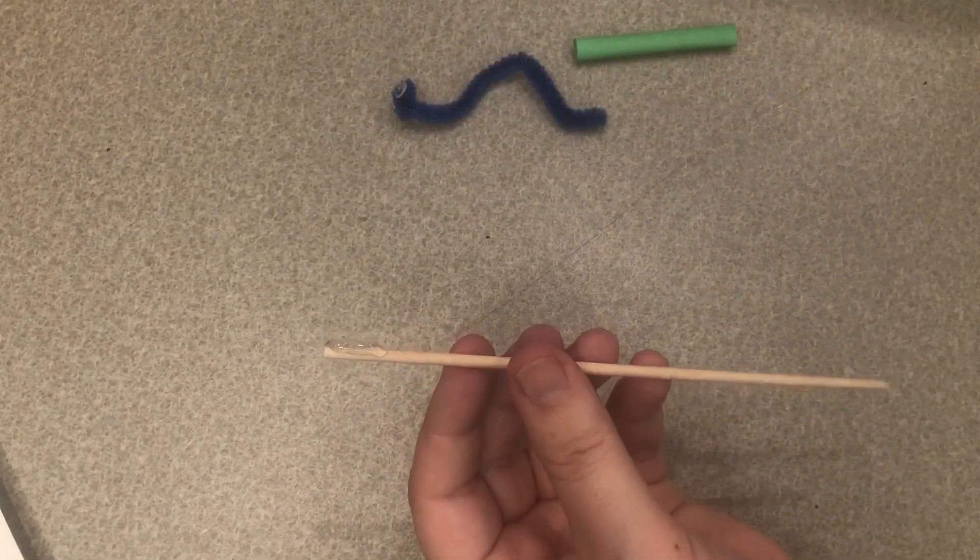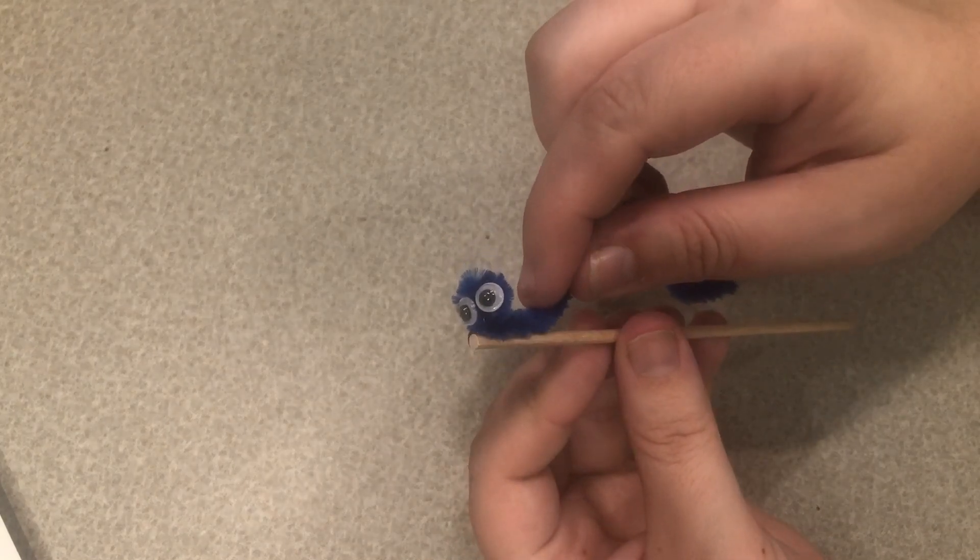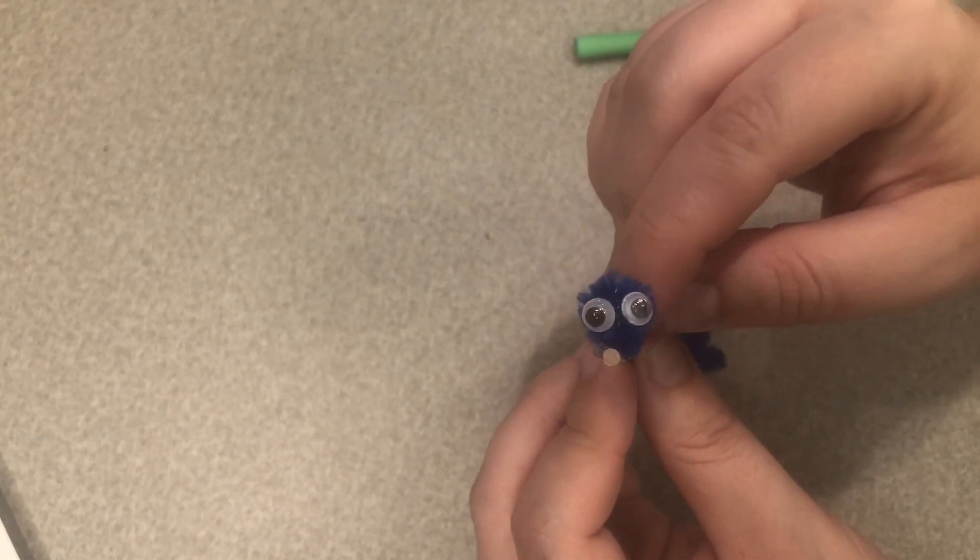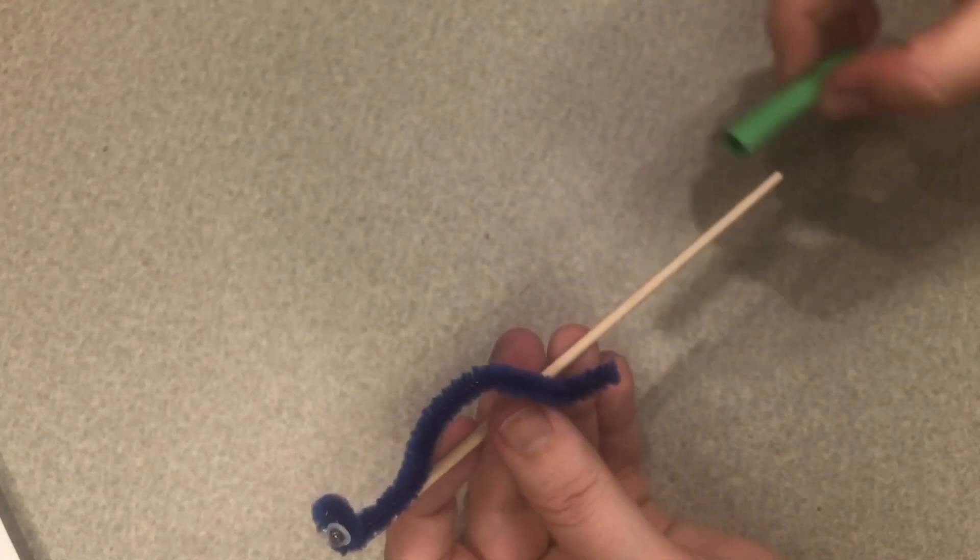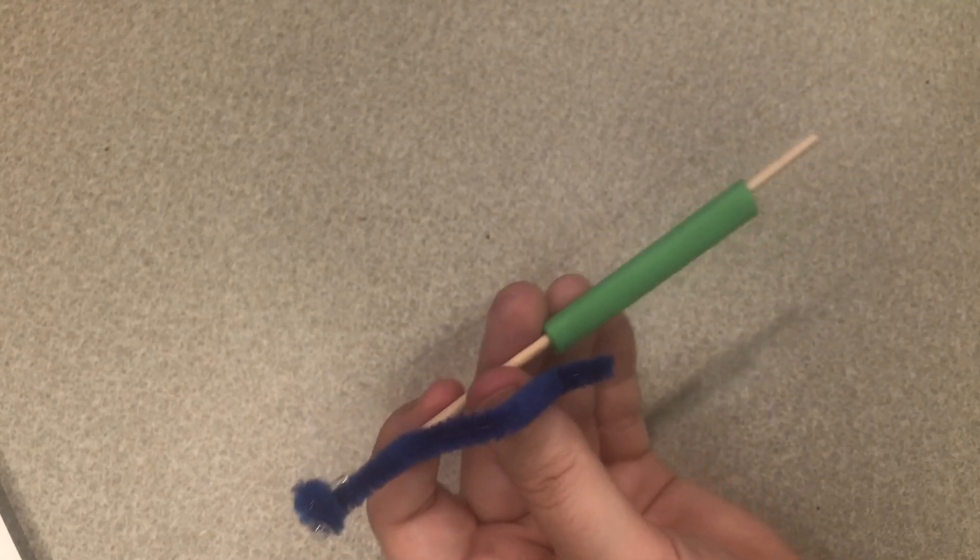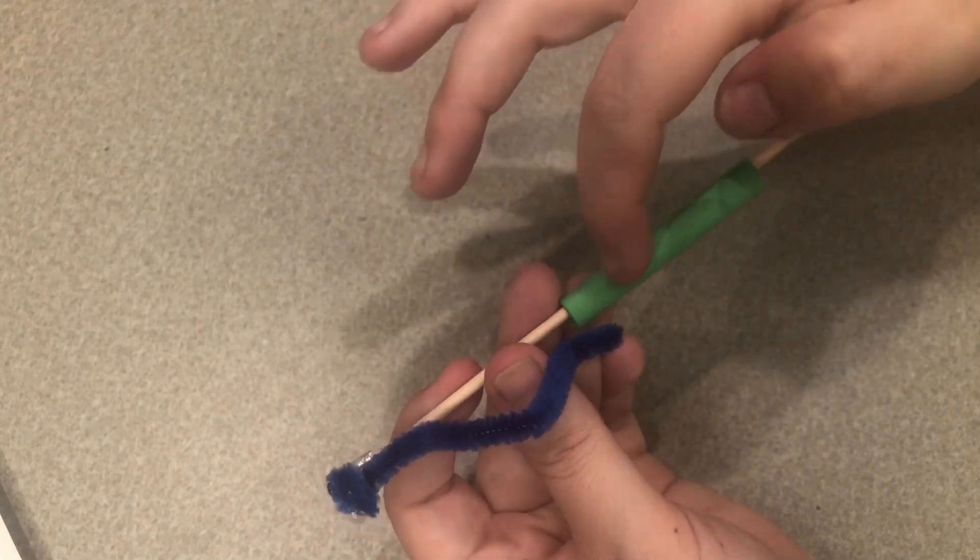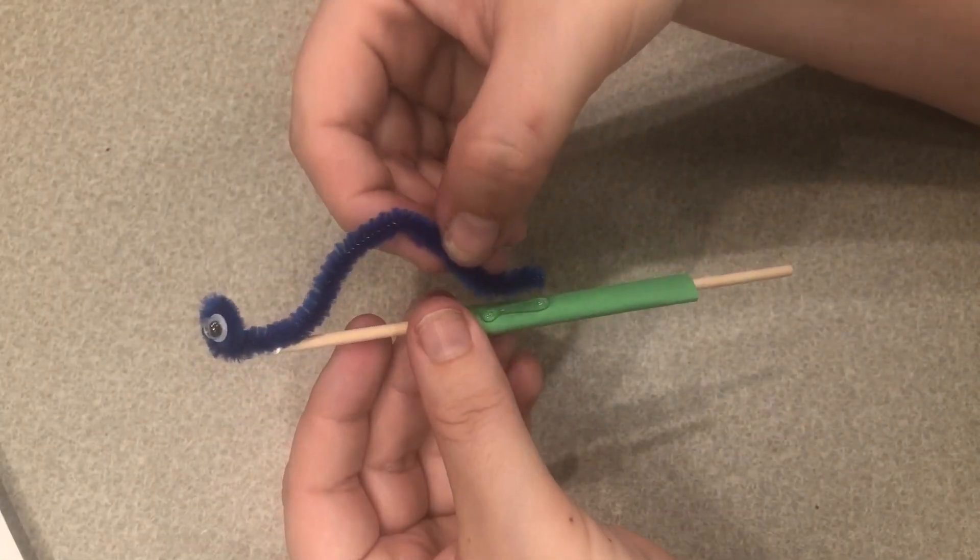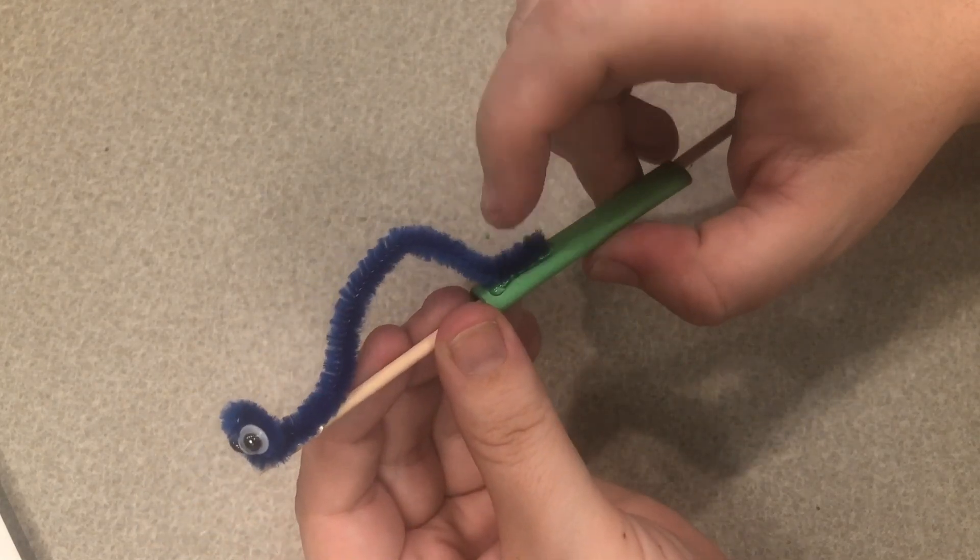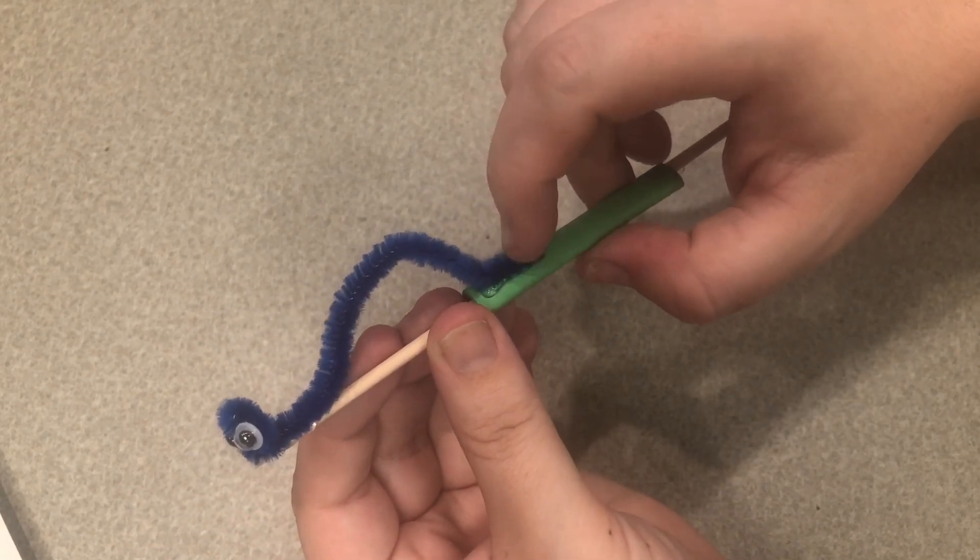So I'm putting some hot glue on the edge of my dowel rod and then adding my little worm, and then I'm going to add some hot glue to the paper and stick the back of my little caterpillar to that.